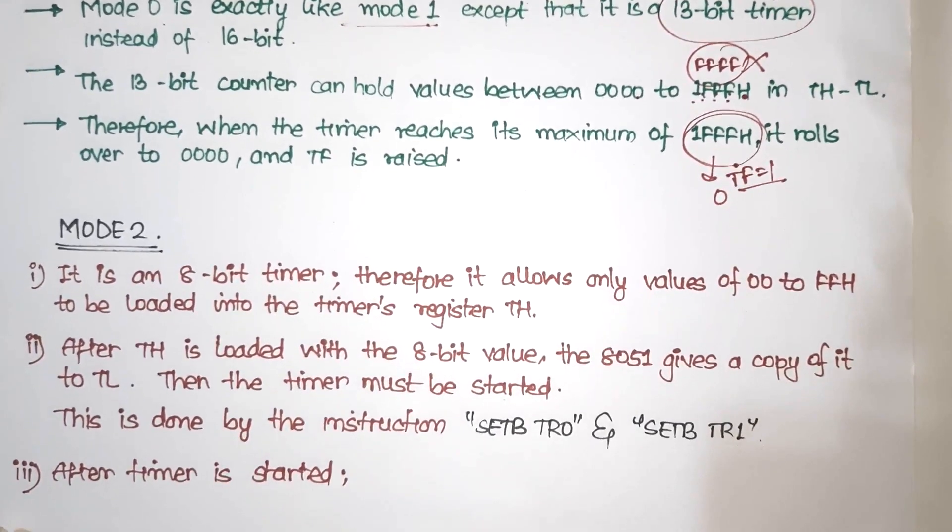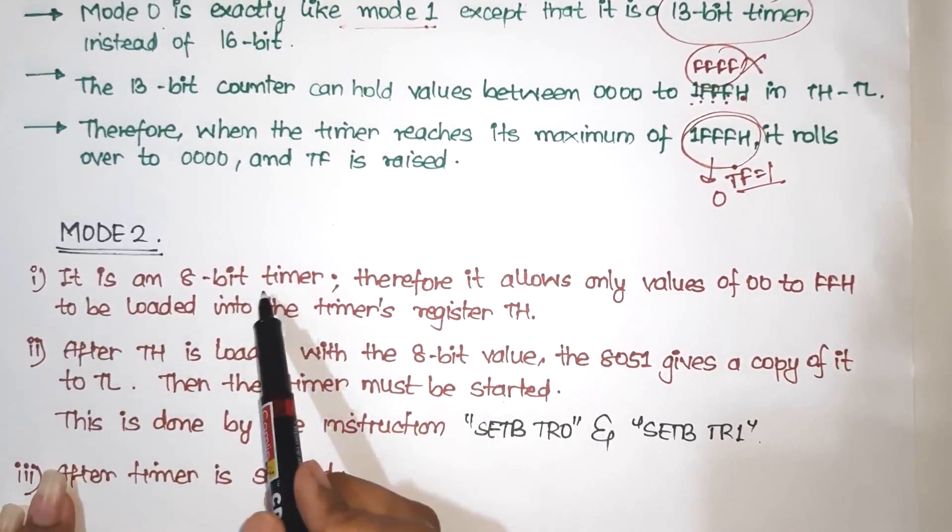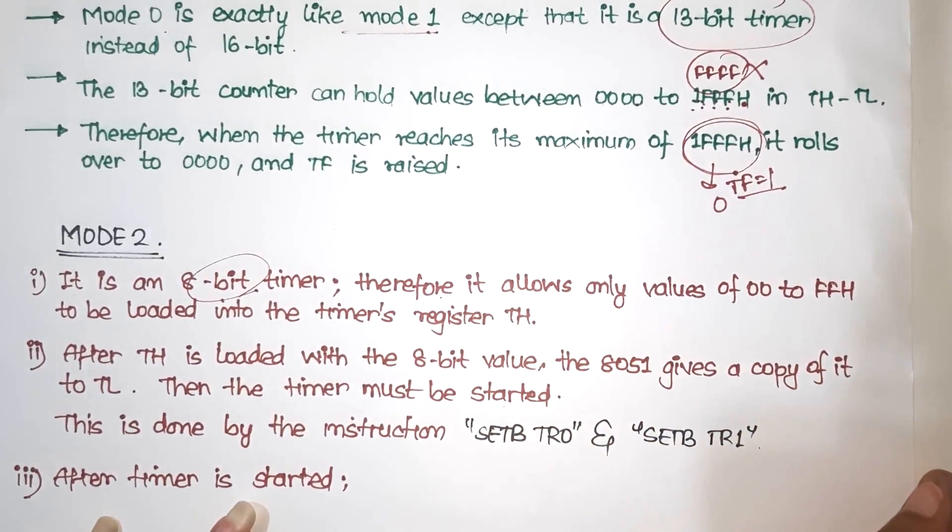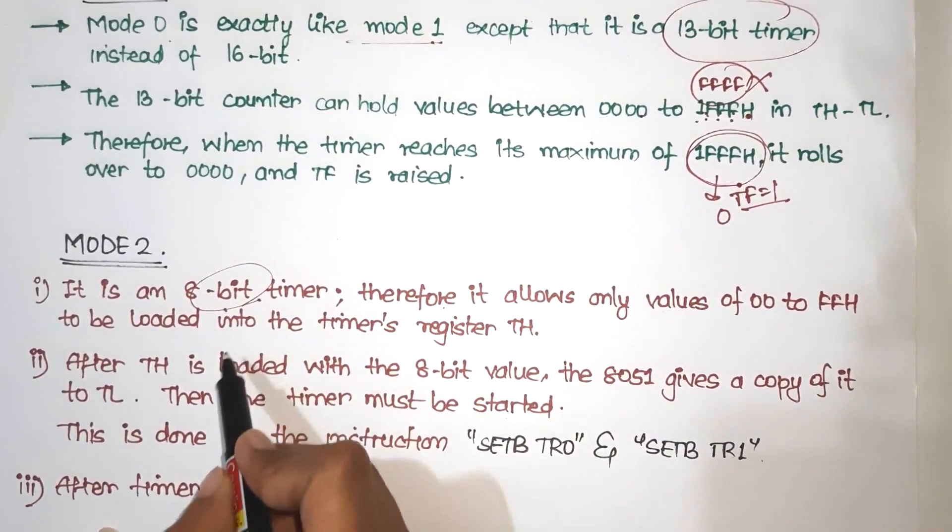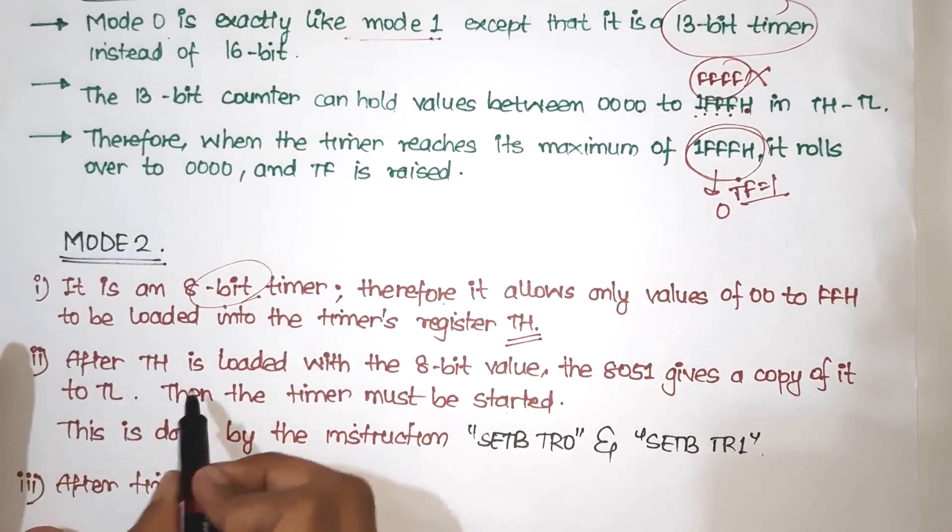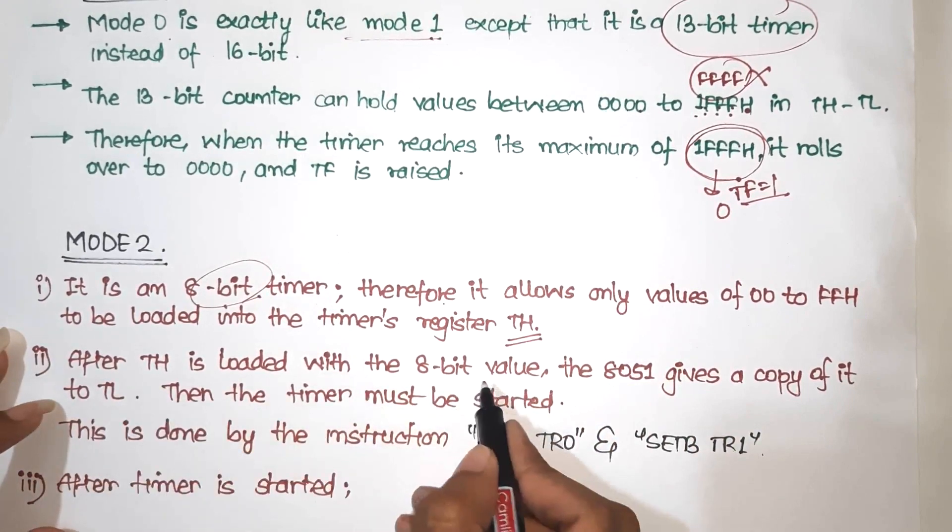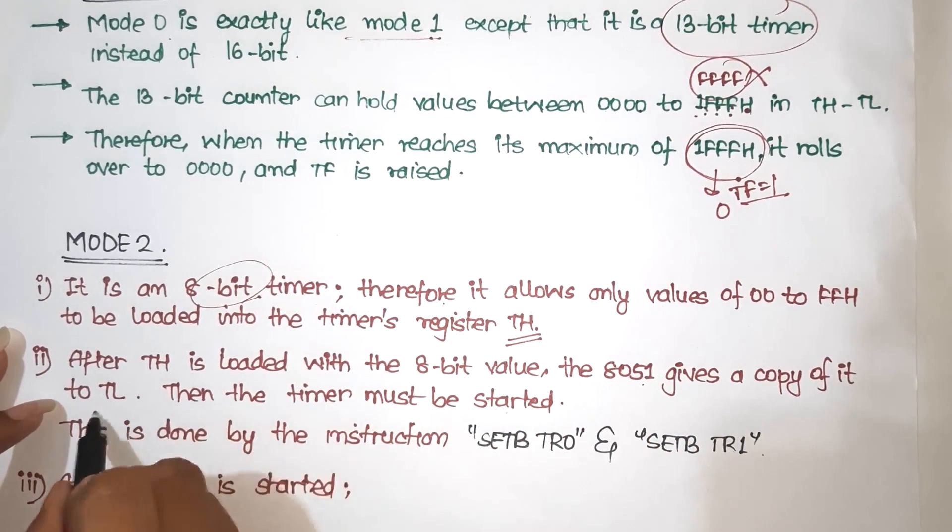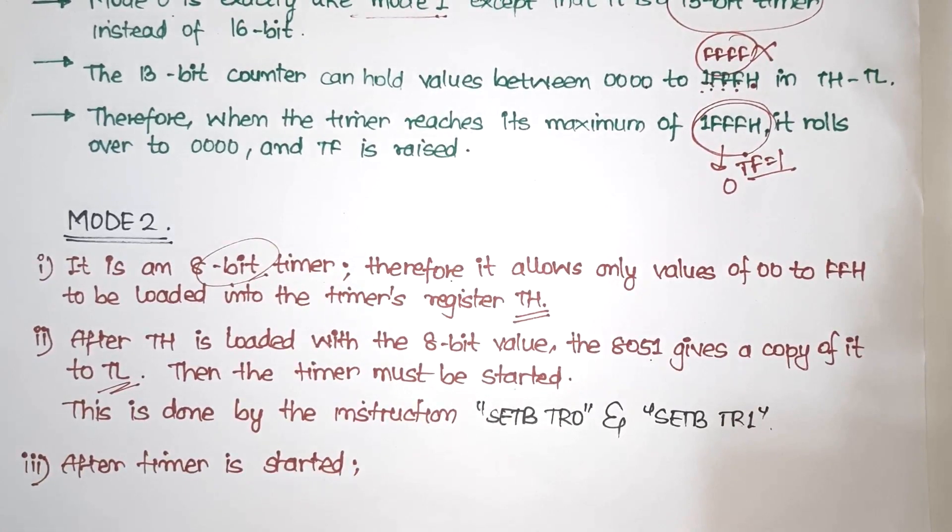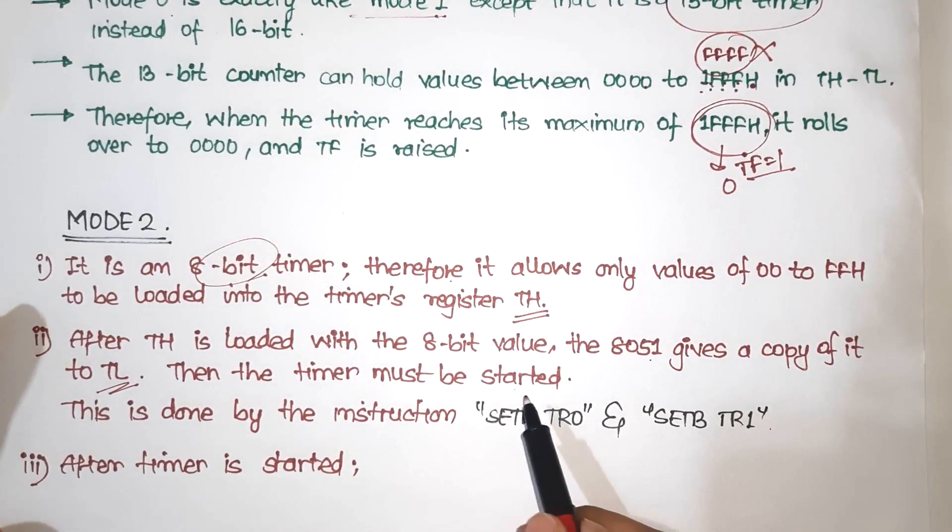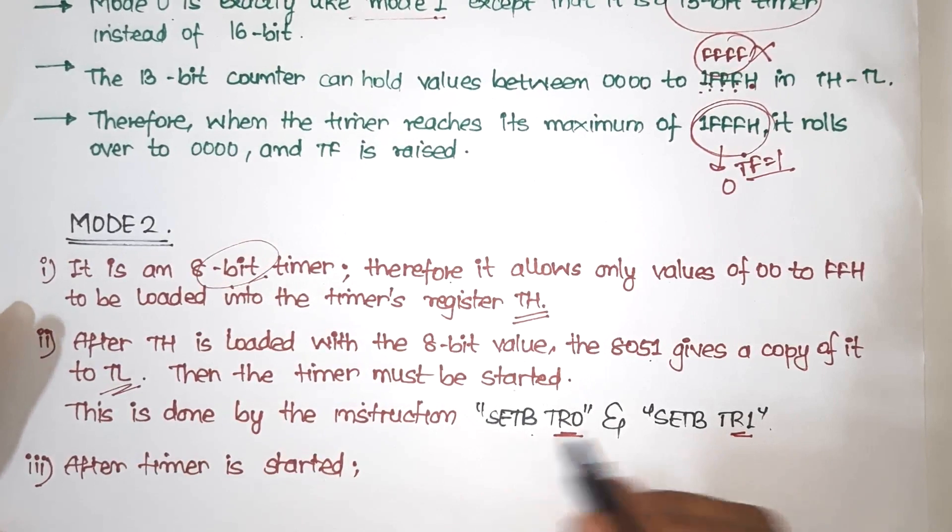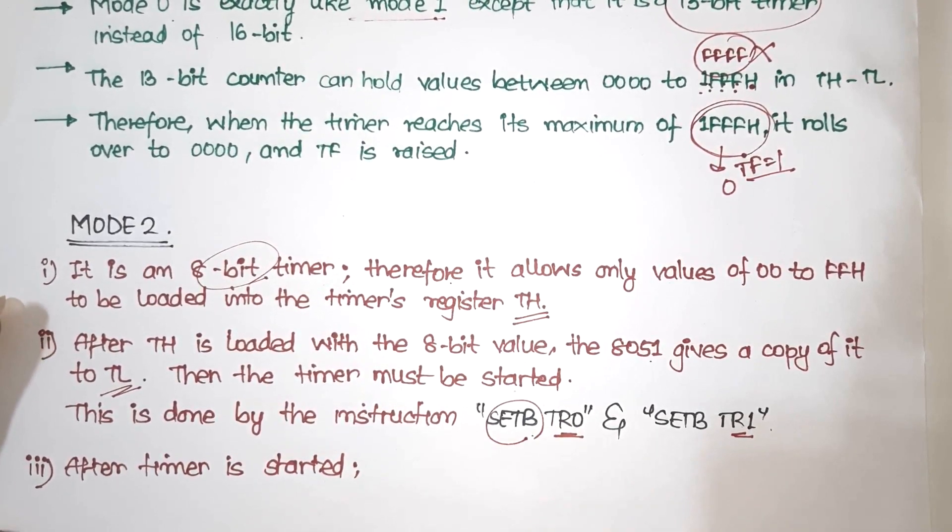So the next important mode is mode 2. It is an 8-bit timer. Therefore it allows only values from 00 to FFH. So we will load this into timer's register TH. After TH is loaded with the 8-bit value, it will copy to TL. Then the timer must be started. Then our timer will start. So once TH value goes, a copy of the same will be given to TL, and then our timer will start. This is done by the instruction SetBit TR0 and SetBit TR1 depending on the timer. So it will start the timer.